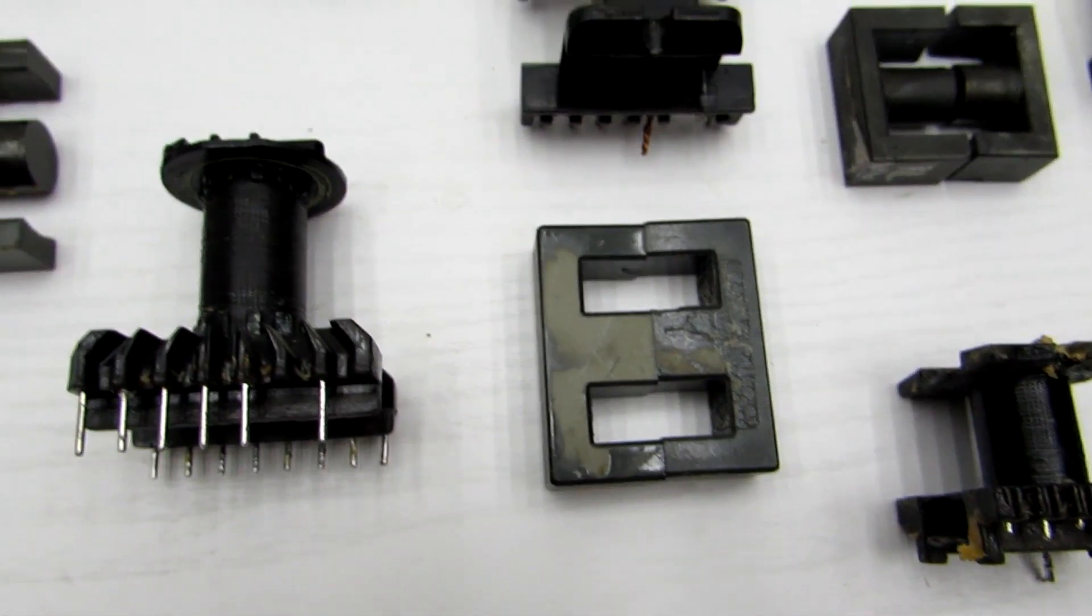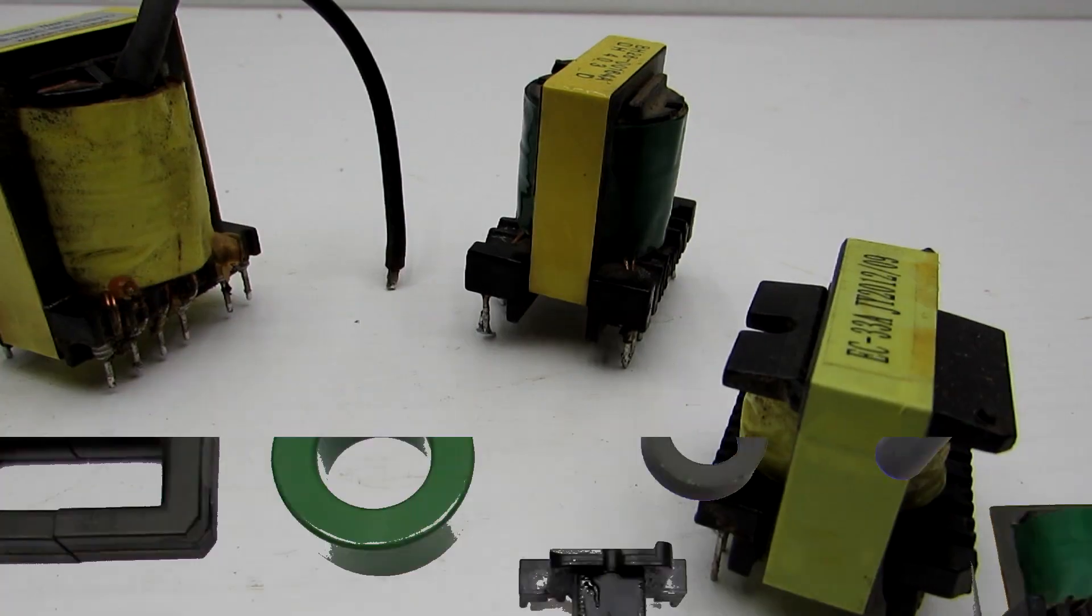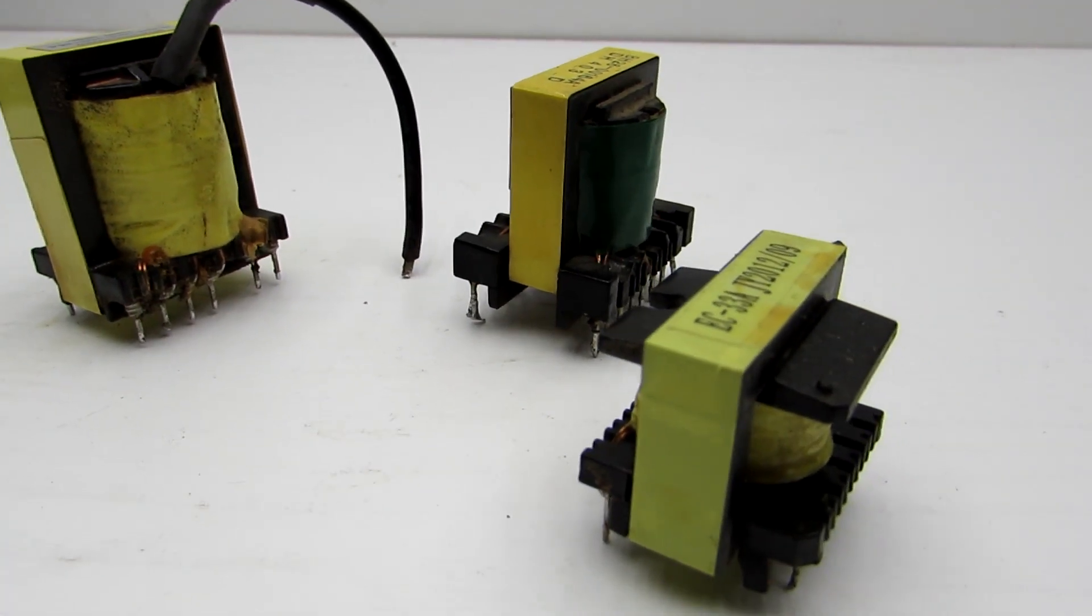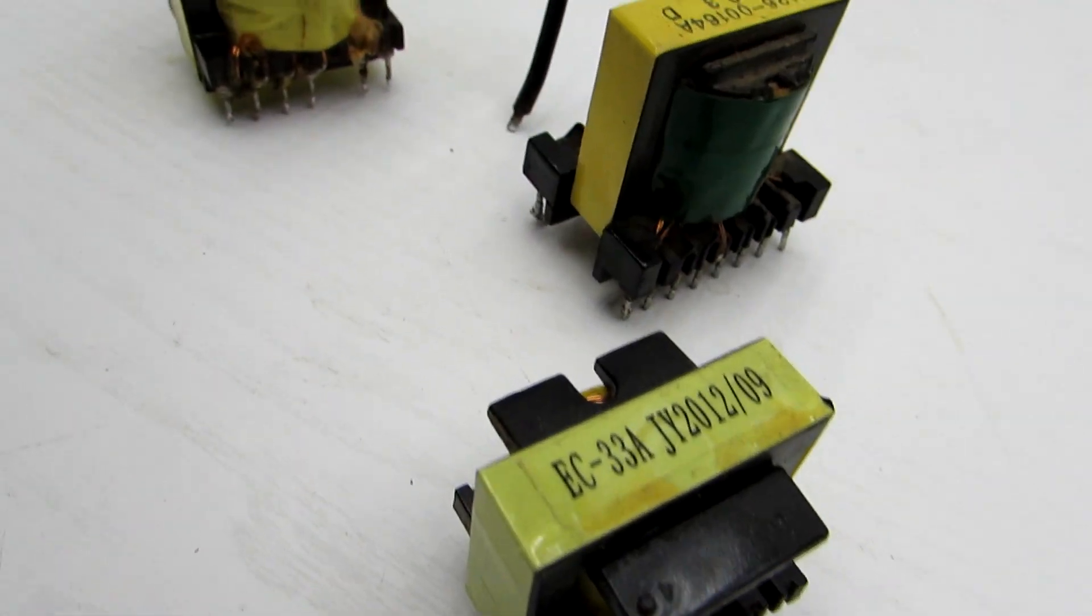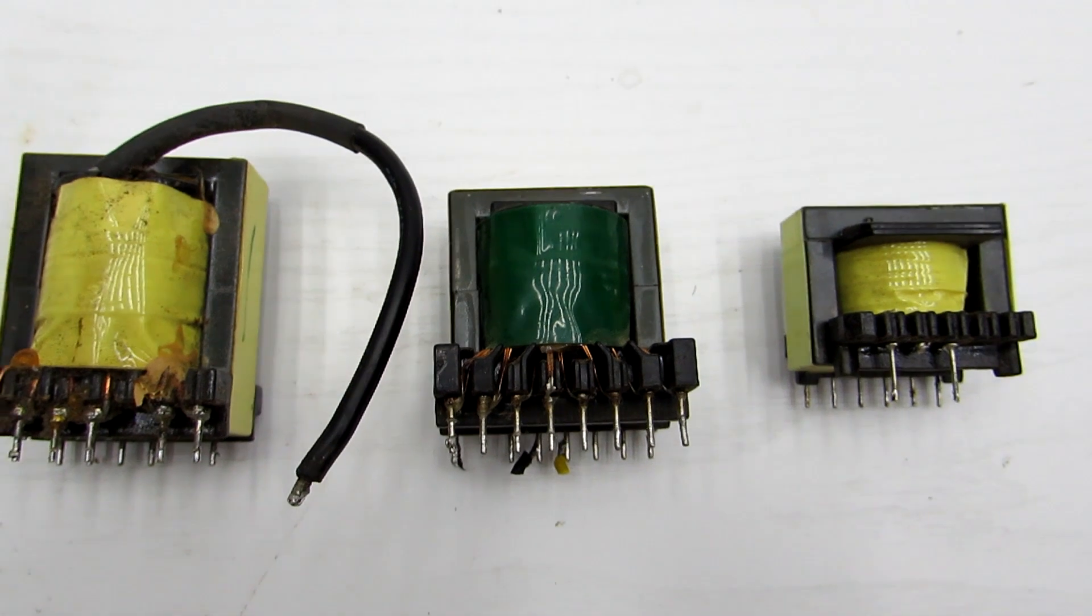The most affordable way is using cores from industrial power supplies, in particular from computers. But disassembling a transformer core for rewinding is not easy. I'll show you several methods.